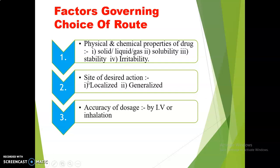The second factor is the site of desired action — whether we need a localized or generalized effect. If we need a localized effect in a limited part of the body, the drug should be applied by the local route. Whereas if we need a generalized or systemic effect, it should be administered by the parenteral route. The third factor is the accuracy of dose, which is important in the case of potent drugs. Potent drugs are generally given in very small quantities, and even a small increment in dose can cause toxicity. These drugs are given in accurate doses, and this adjustment is only possible by the IV or inhalation route.